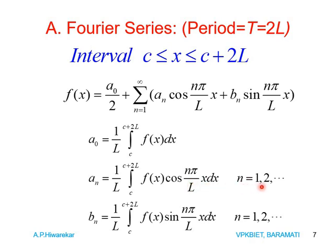And bₙ is (1/L) ∫ from C to C+2L of F(x) sin(nπx/L) dx, where n = 1, 2, 3, and so on.